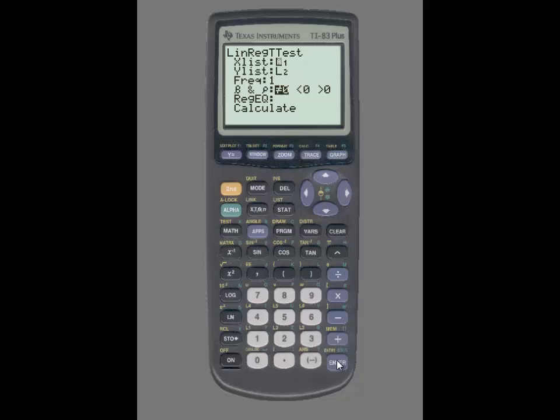Frequency is set to 1. Go down to calculate, highlight that, and press enter. On this next screen, you'll see A, which represents the y-intercept. If you scroll down, you'll see B, which represents the slope. And if you continue scrolling, you'll see the value of r, which is the correlation coefficient.